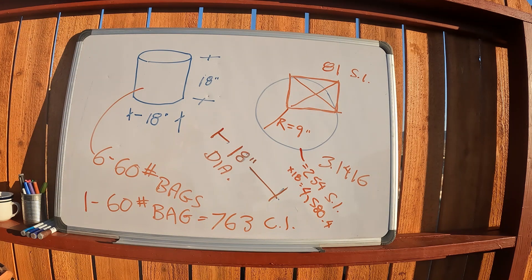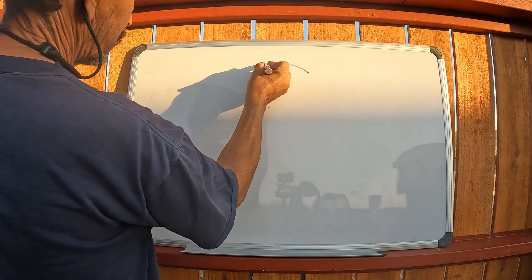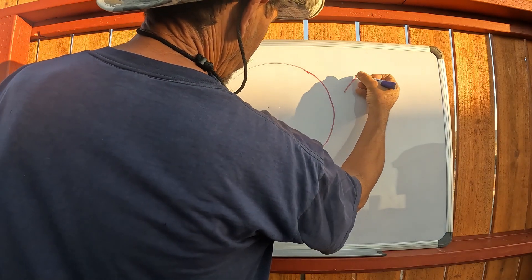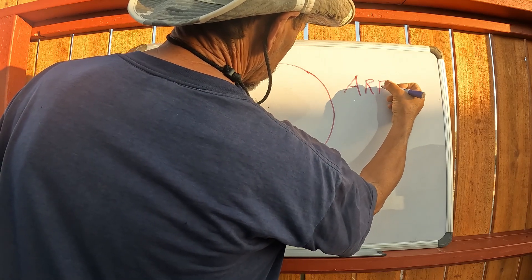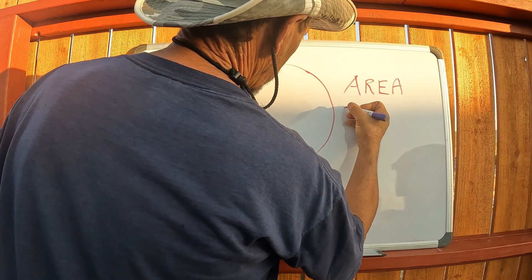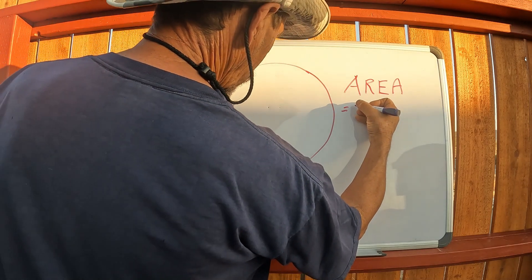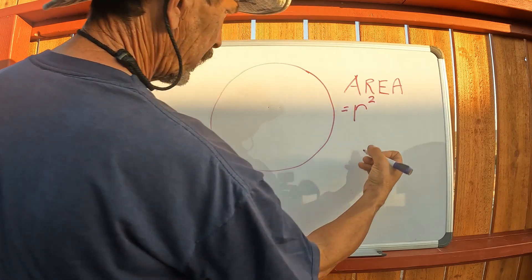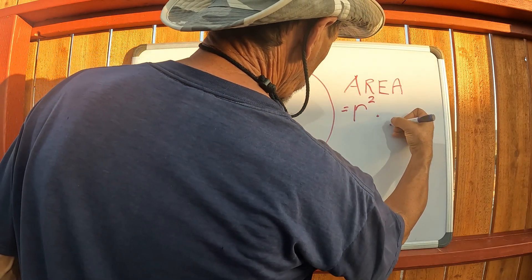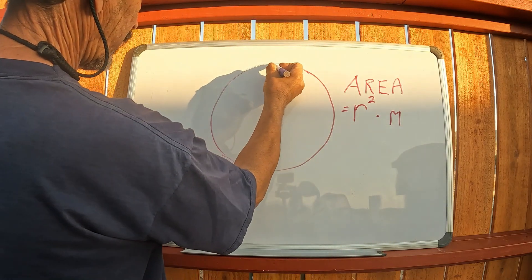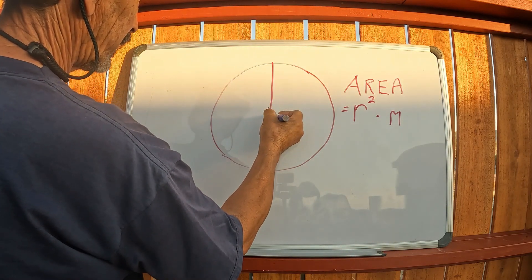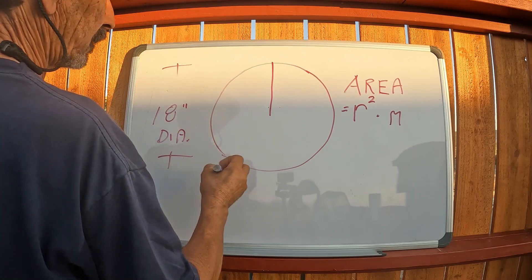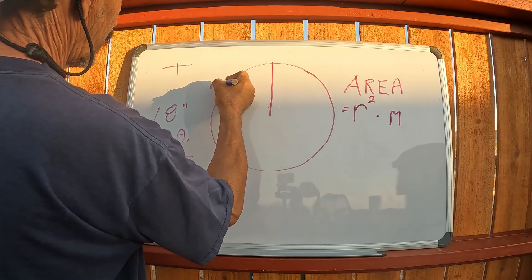I forgot to mention, for a circle area equals r radius squared times pi. So in the case of my formula I was working out, this is an 18-inch diameter, so we have a 9-inch radius, r equals 9.